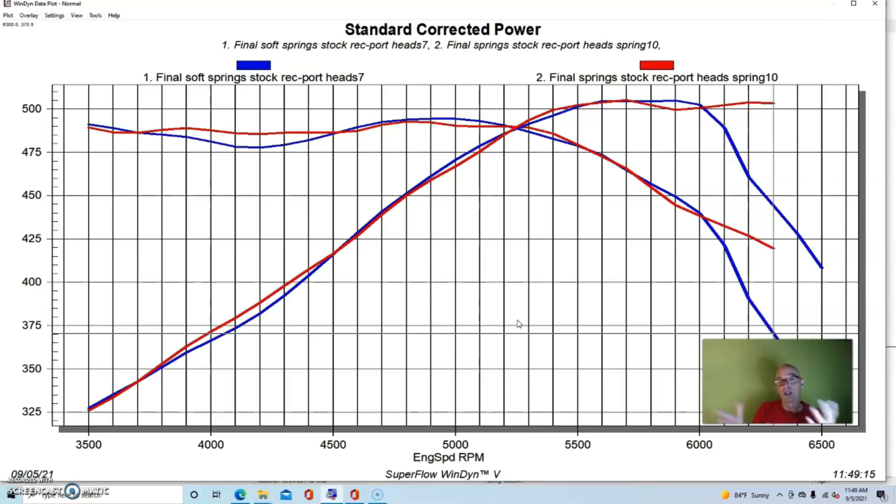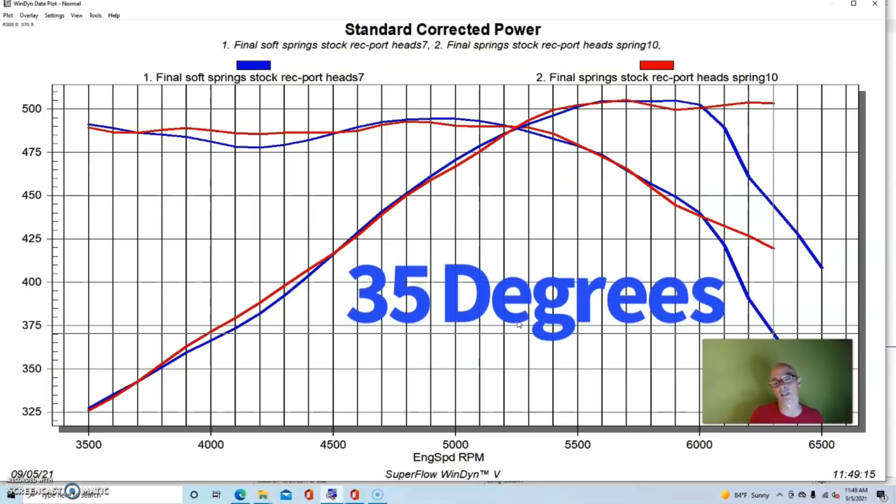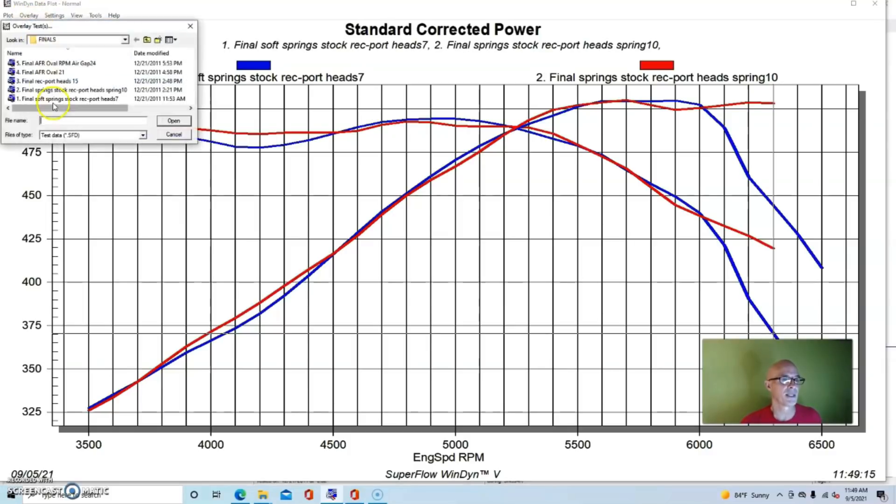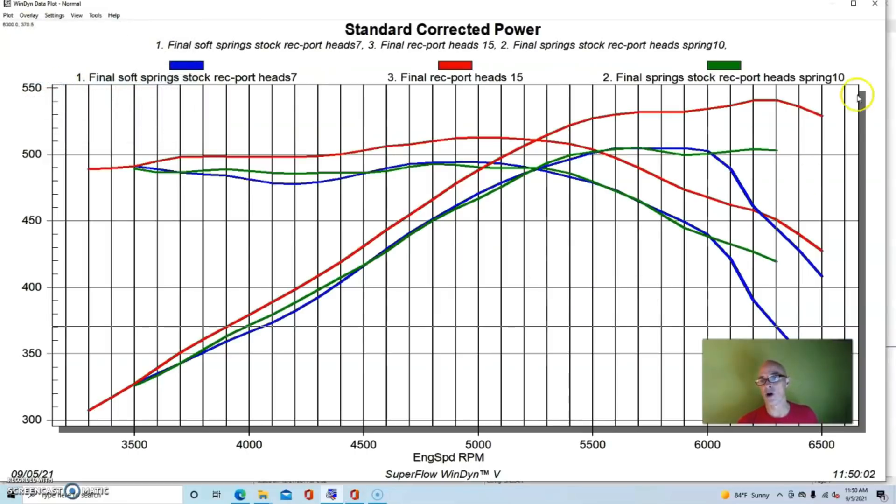We upgraded from here. This was run with 35 degrees of total timing. The timing was locked on this combination. The distributor's locked; all we had to do is move it to adjust the timing. This is 35 degrees. Now this rec port head, this 119cc rec port iron head, wanted more timing and it responded. We eventually put 41 or 42 degrees of timing in this thing.